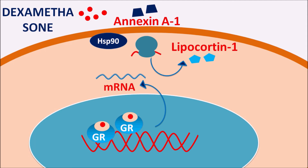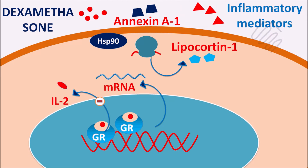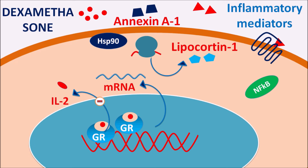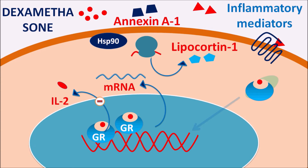The mRNA undergoes protein synthesis, releasing proteins such as lipocortin-1 and annexin A1. At the same time, dexamethasone can block the gene transcription of certain mediators such as IL-2, an important mediator responsible for immune response, thereby inhibiting the synthesis of cytokines. Additionally, inflammatory mediators acting on their receptors can release NF-κB (nuclear factor kappa B), which interacts with DNA to increase transcription of inflammatory mediators. The glucocorticoid receptor bound to dexamethasone can interact with NF-κB and inhibit its activity, thereby suppressing inflammatory mediator synthesis.